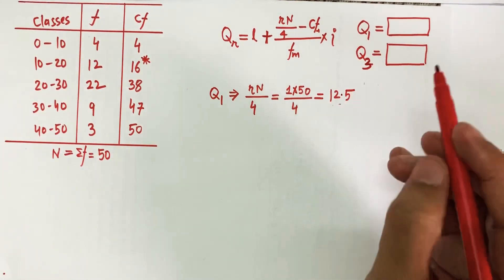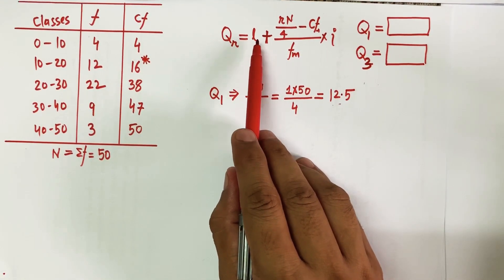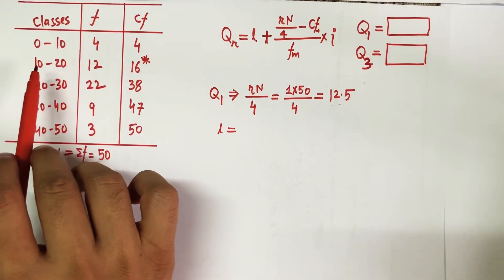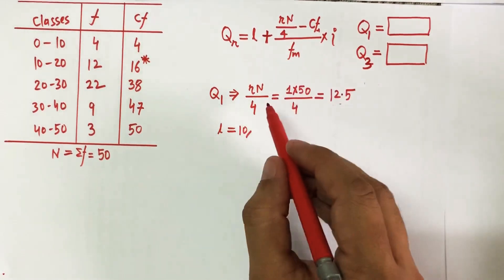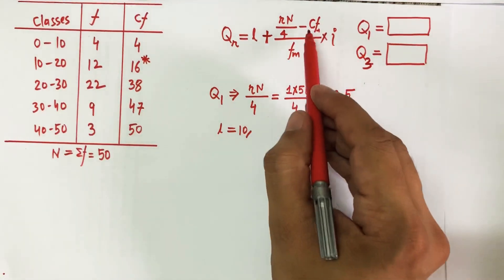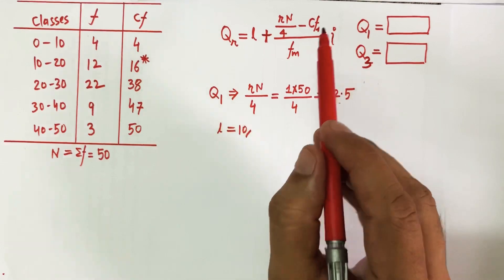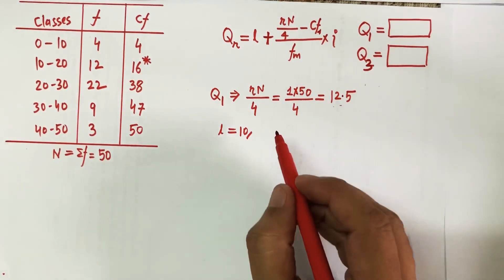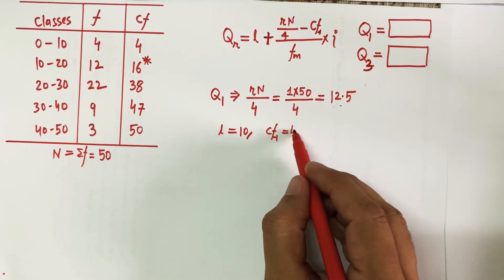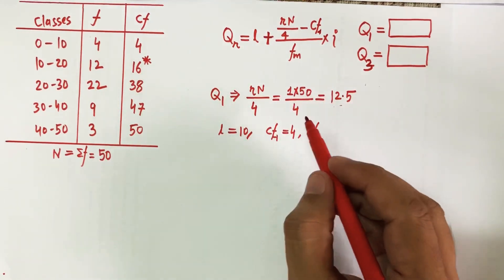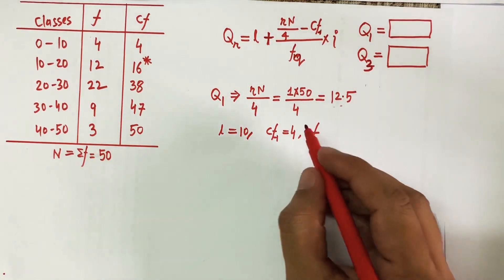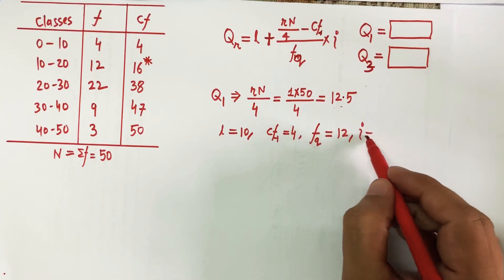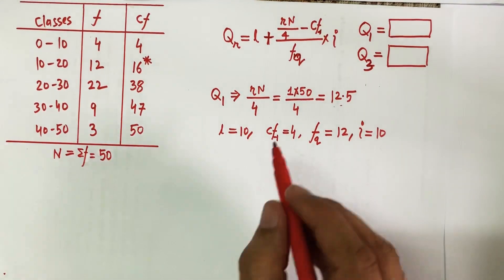The formula for the r-th quartile is: Q_r = L + [(r×N/4 − CF_{prev}) / f_q] × i. Here L is the lower limit of the quartile class, which is 10. CF_{prev} is the cumulative frequency of the class previous to the quartile class, which is 4. f_q is the frequency of the quartile class, which is 12. And i is the class interval, which is 10.